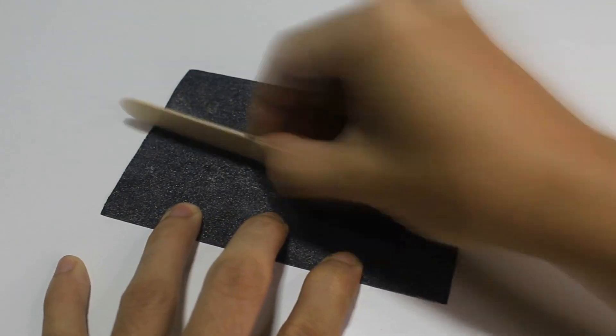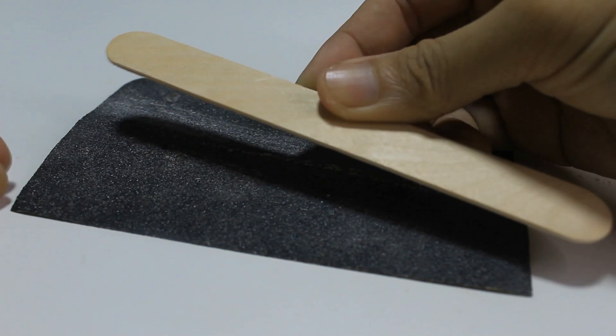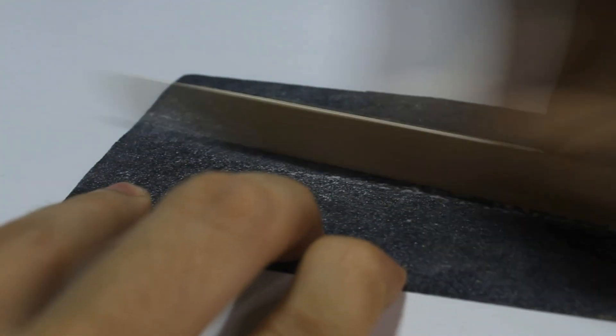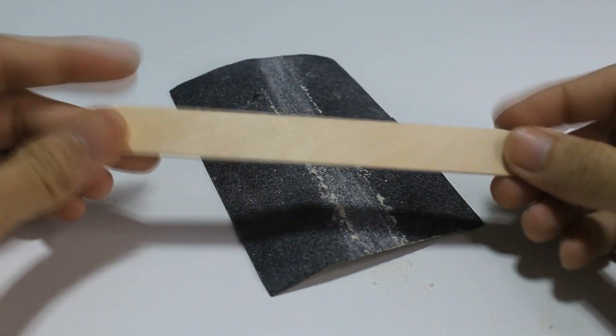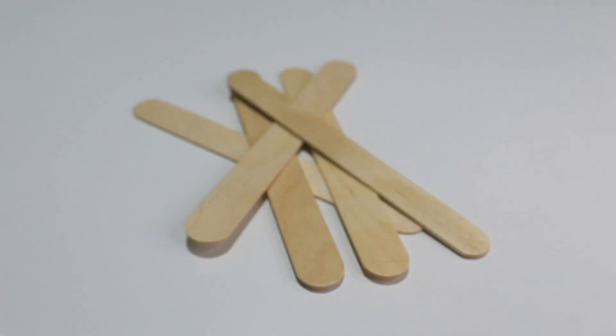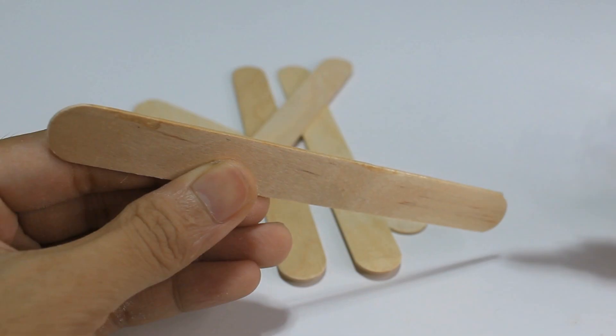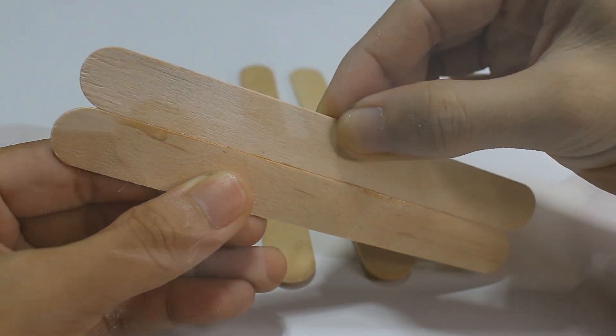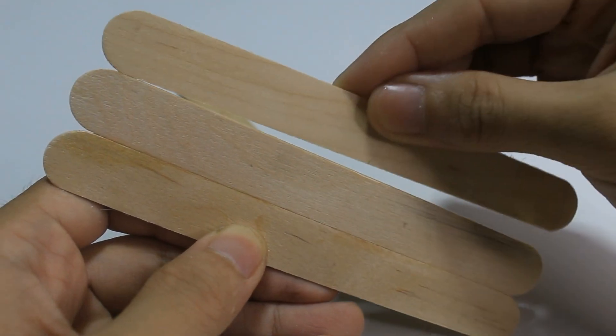To start with, we will sand the sides of the sticks using P80 sandpaper. Make sure to do it on both sides. Then combine the five sticks using super glue, slowly doing it one after another.